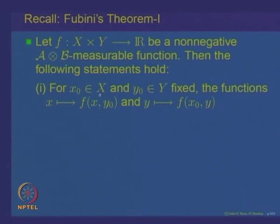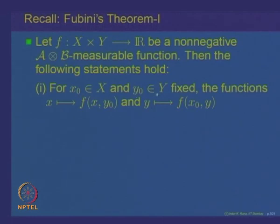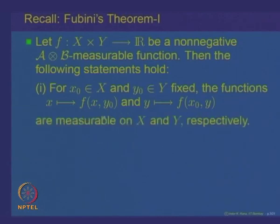For example, if x-0 in X is fixed, then the function y going to f(x-0, y) is a function of the variable y on the space Y, so it becomes measurable with respect to the sigma algebra B. Similarly, for every fixed y-0 in Y, the function x going to f(x, y-0) is a measurable function on X with respect to the sigma algebra A. So for every one of the variables fixed, in the other variable it becomes a non-negative measurable function.